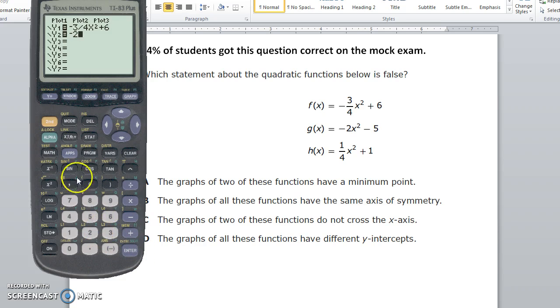And then negative two x squared minus five. That's the second one. And then the last one, one divided by four, x squared plus one.